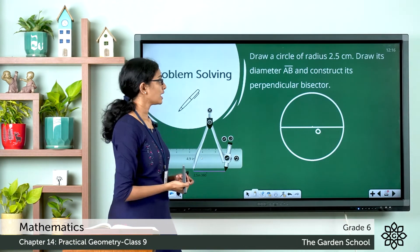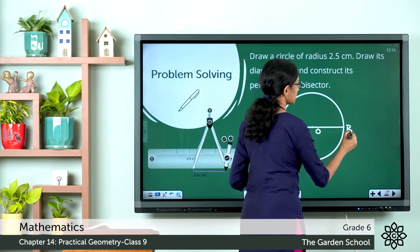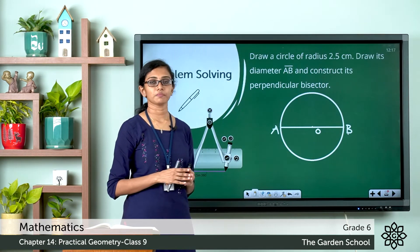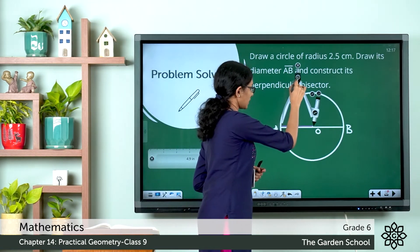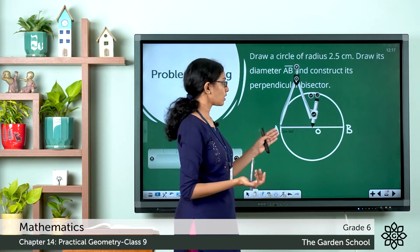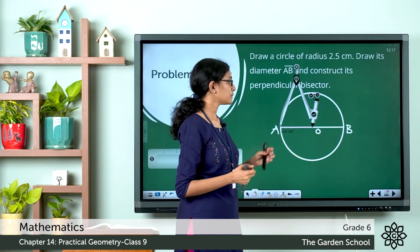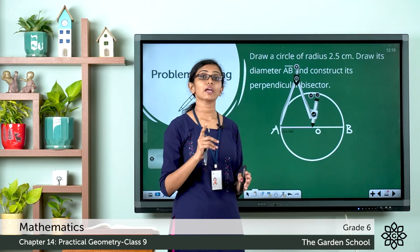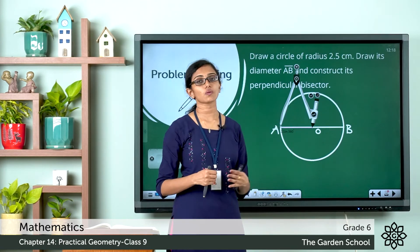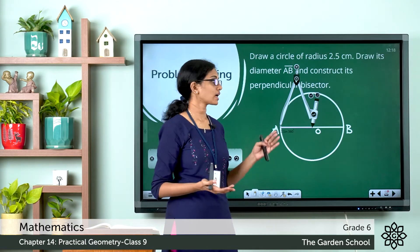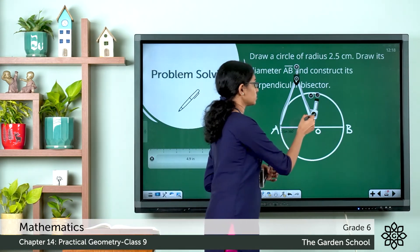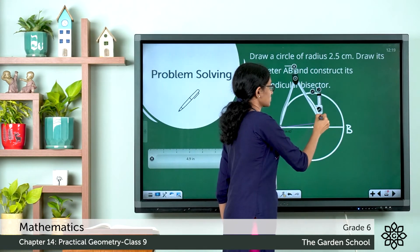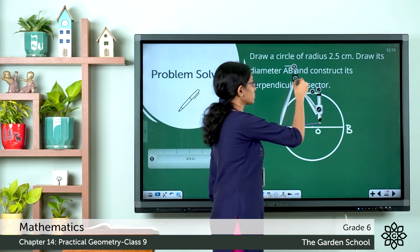Here we have the diameter of the circle — let this be point A and let this be point B. To this diameter we have to draw a perpendicular bisector. Keep the pointer of the compass at point A. AO is the radius, which is half the diameter, or the midpoint of line segment AB. Since O represents the midpoint of AB, we have to draw a perpendicular passing through O, which is the center of the circle. We have to choose a length more than AO, OB, or the radius of the circle, and draw intersecting arcs.